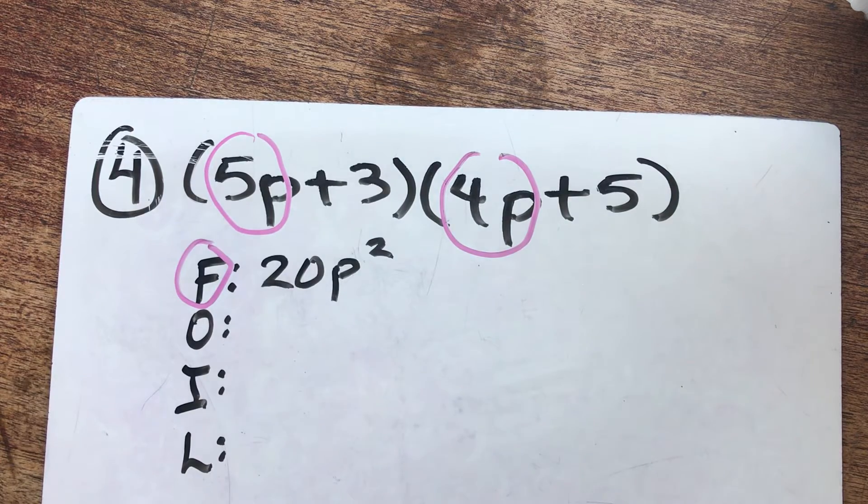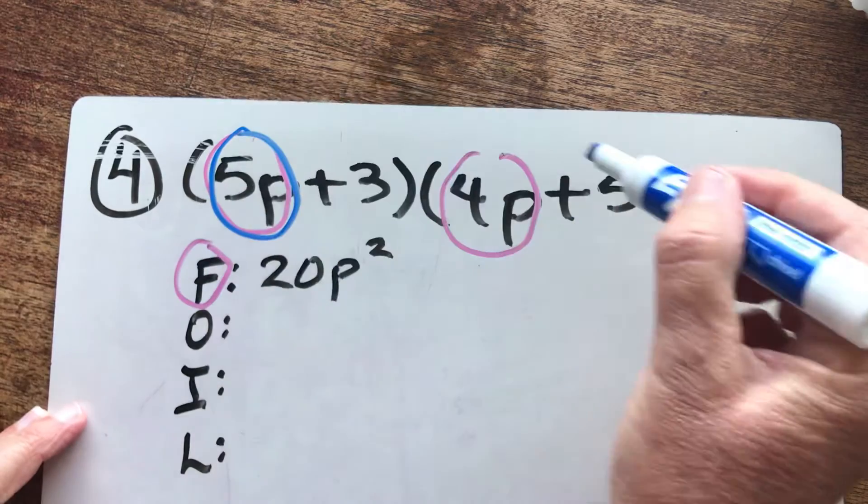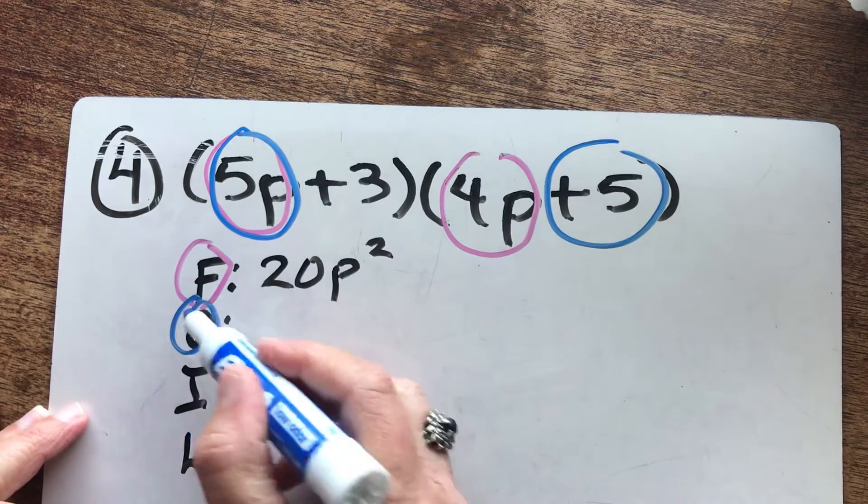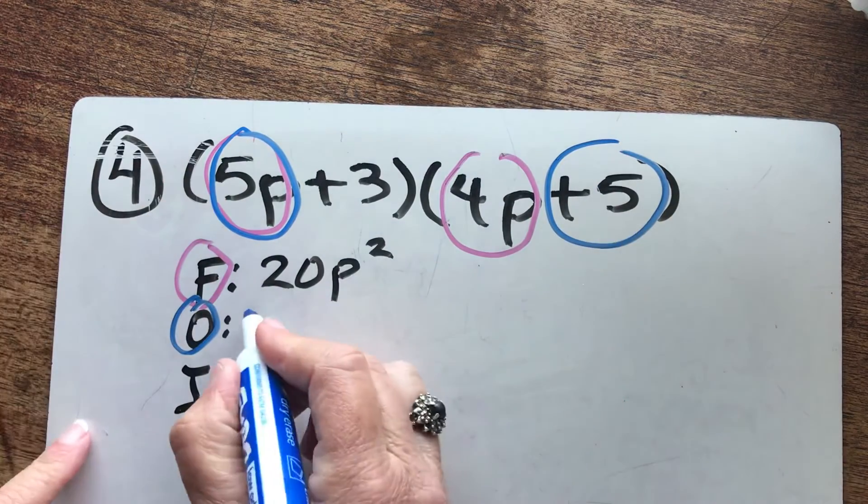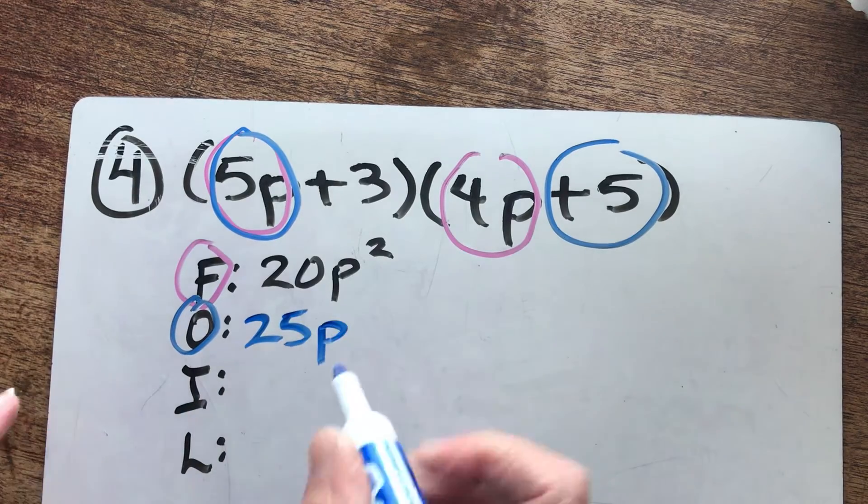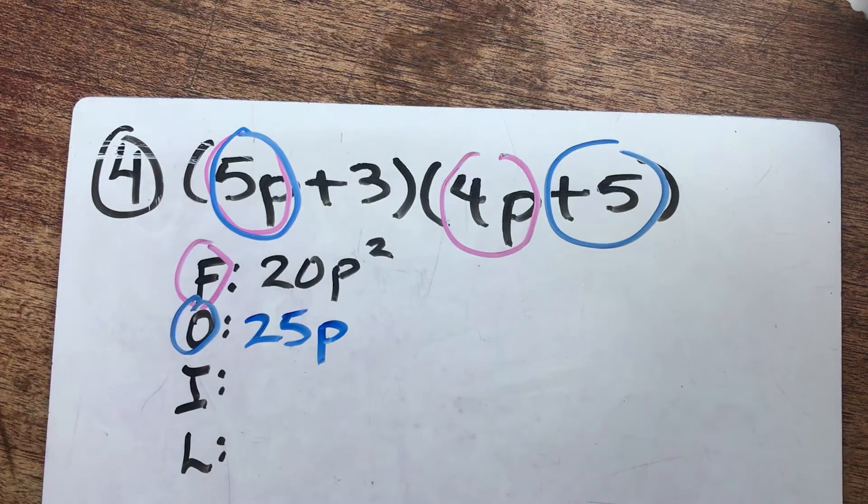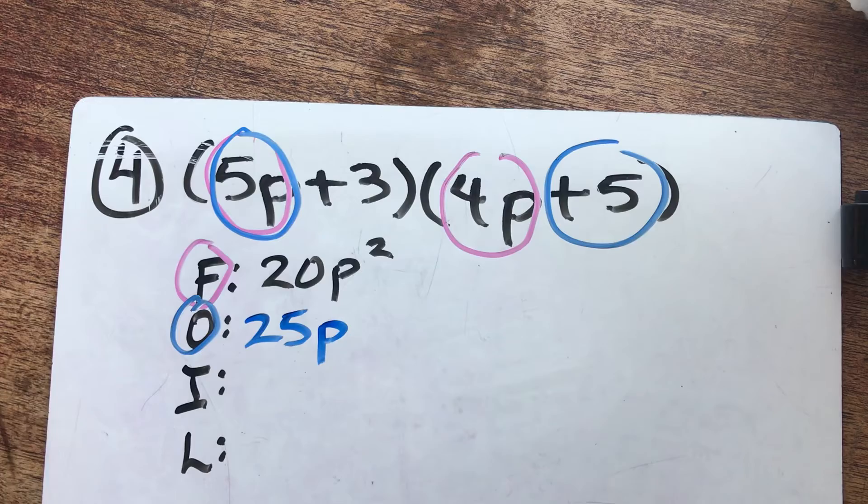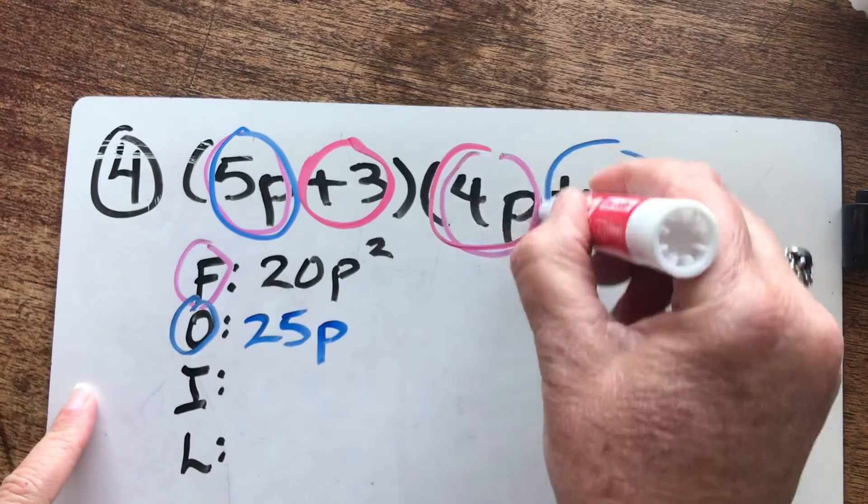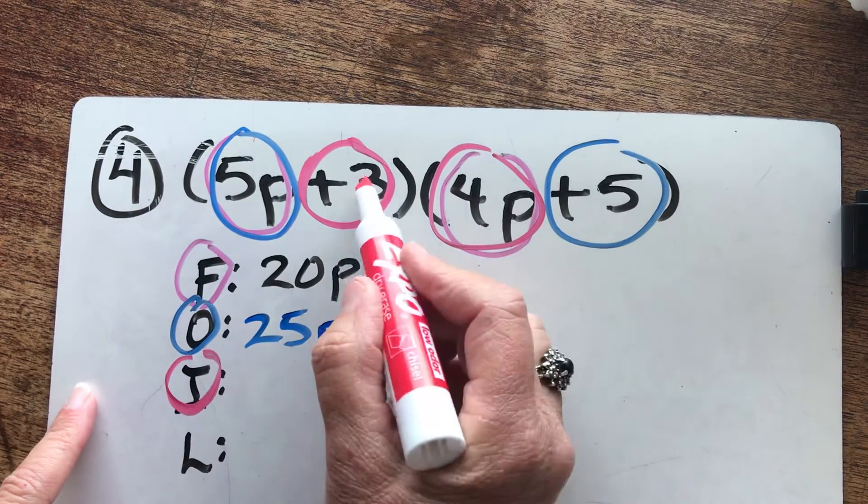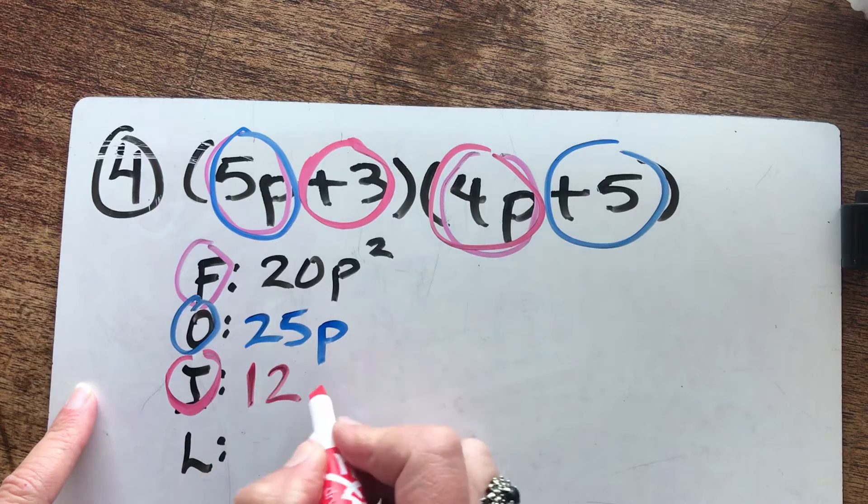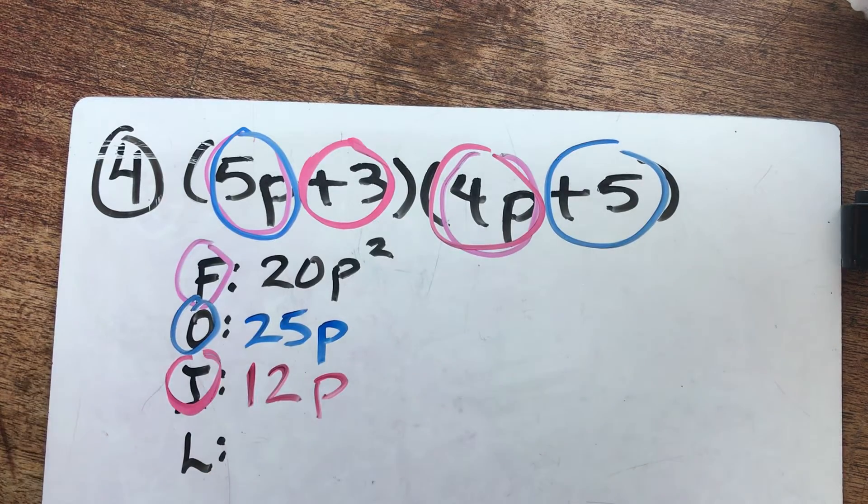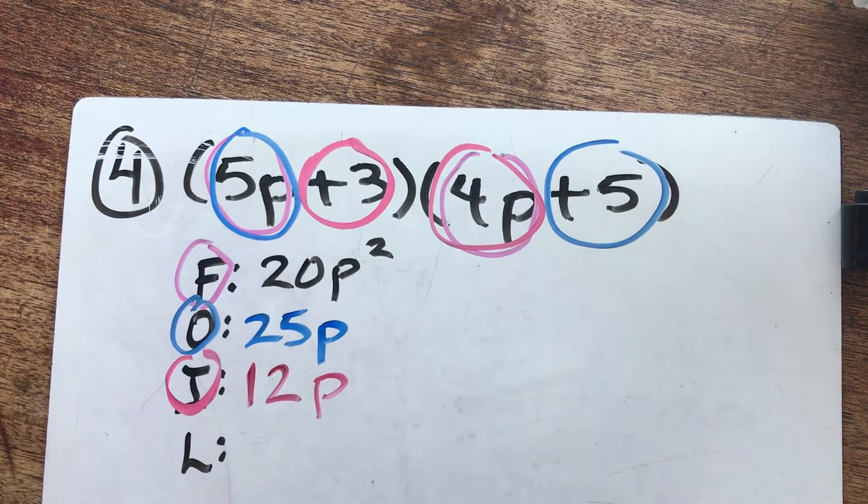Let's use a different color. O stands for the outer. So that's blue and blue. That's my outer. So that's 25 P. Let's go for a different color. I have a red here. Inner. Three times four is 12. It's going to be 12 P, right?